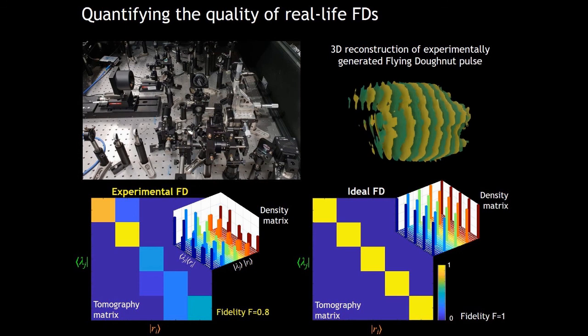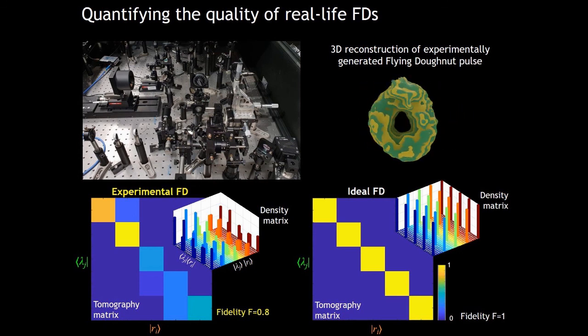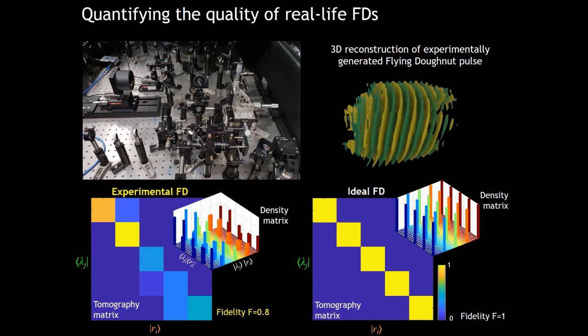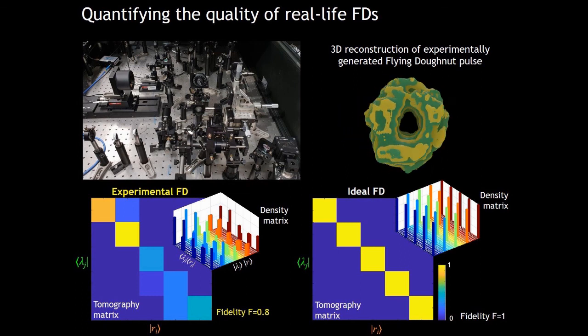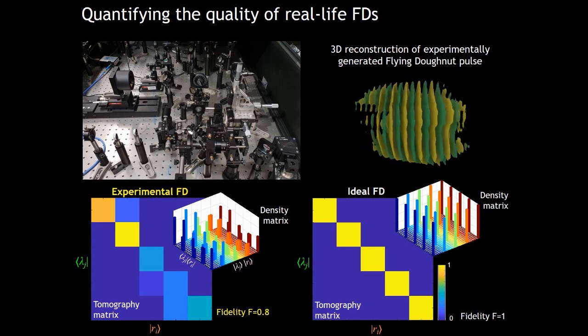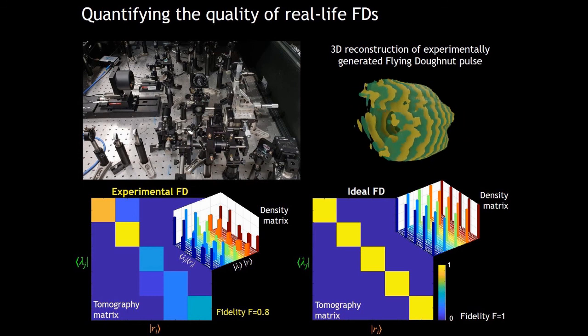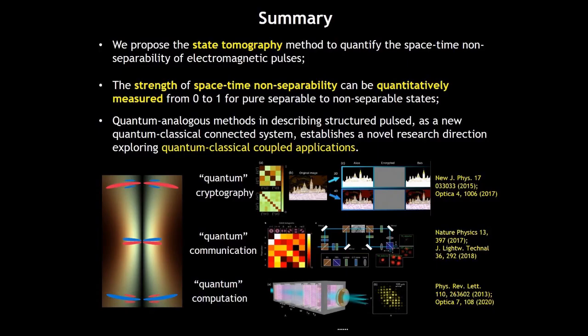And then convert the radial polarized pulse into the flying donut by our designed singular metasurface. We measured our experimentally generated flying donut pulse with a fidelity of 0.8, so that we can argue our experimental flying donut pulse has a very good quality.